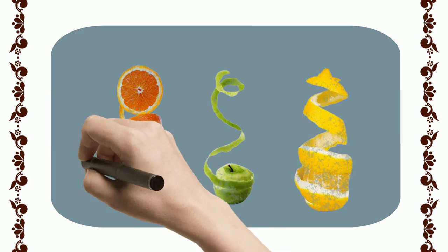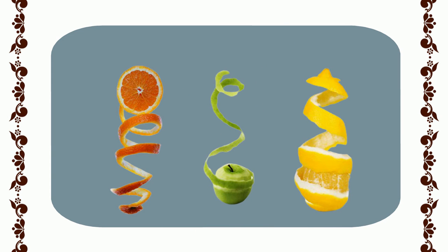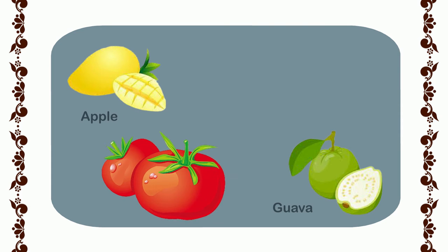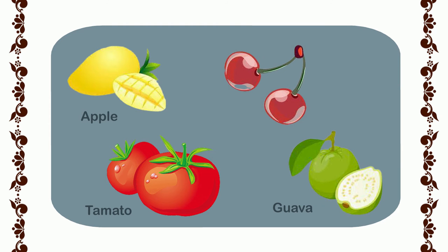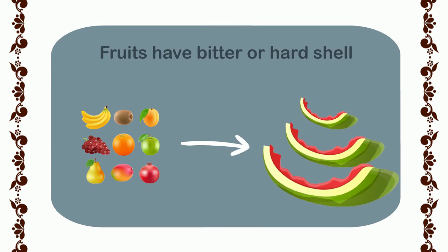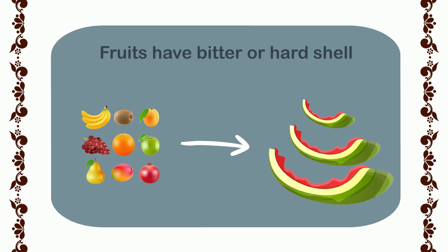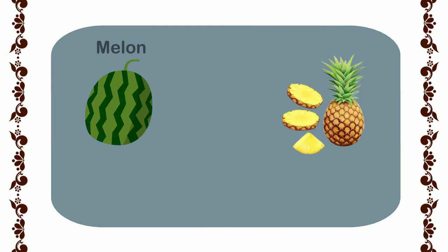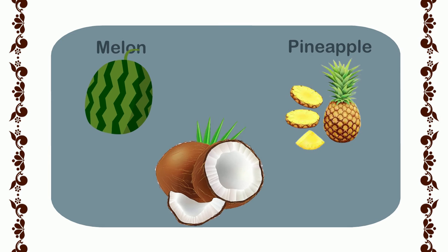Fruits have a covering on them which is called a peel. We eat some fruits along with their peel, such as apple, guava, tomato, and cherry. But some fruits have a bitter or hard shell, and we often remove the peel before eating, such as melon, pineapple, and coconut.